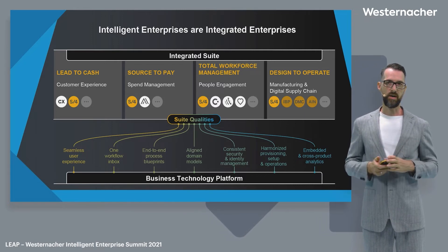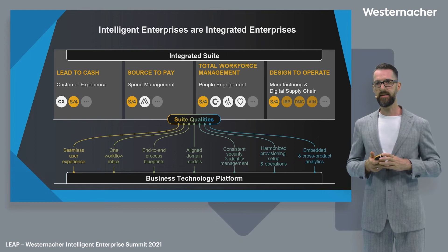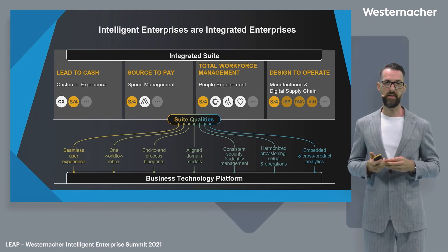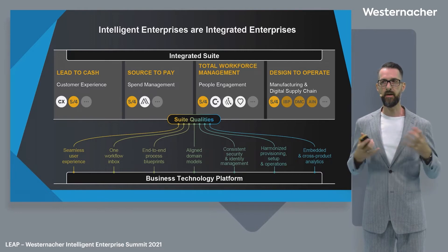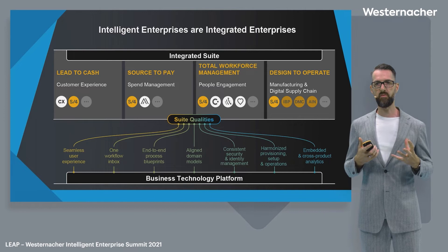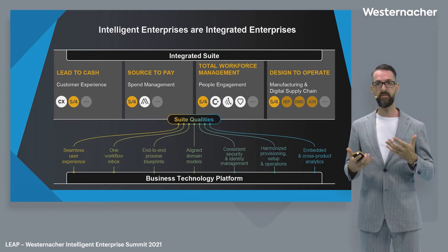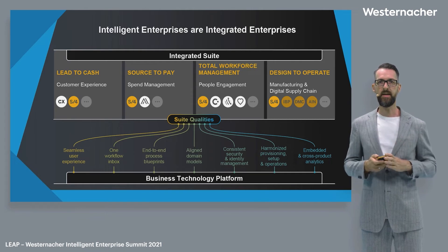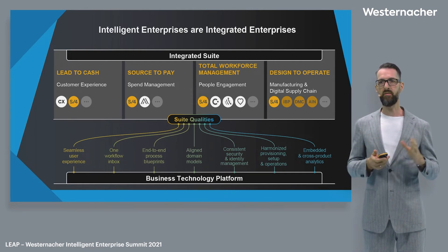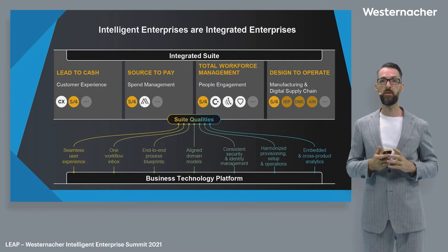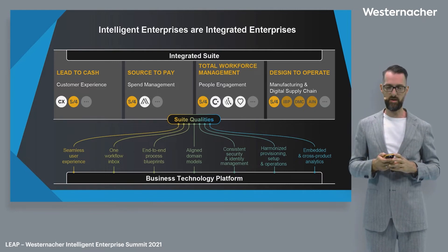Two other examples of kernel services: one domain model and master data integration — two components also exposed by the Business Technology Platform — very important for integration, to ensure that all various components like Ariba and S4HANA speak the same language in terms of master data and domains. And last but not least, we provide with the SAP Analytics Cloud embedded and cross-product analytics, also in terms of financial and operational planning.